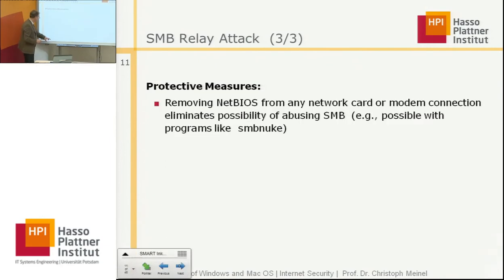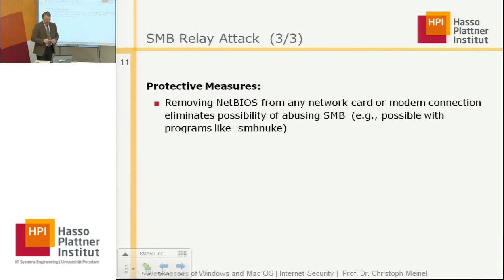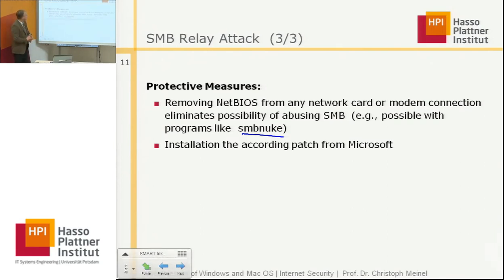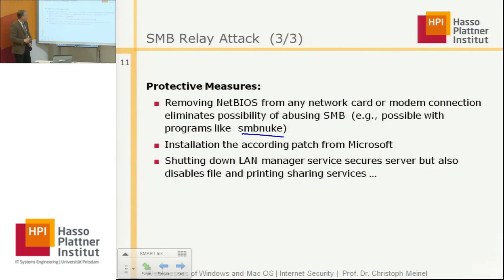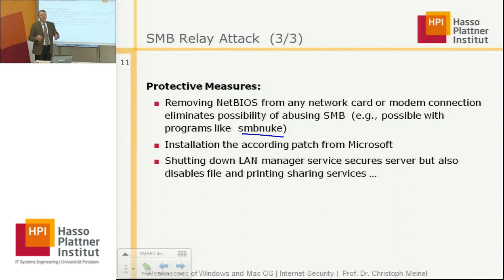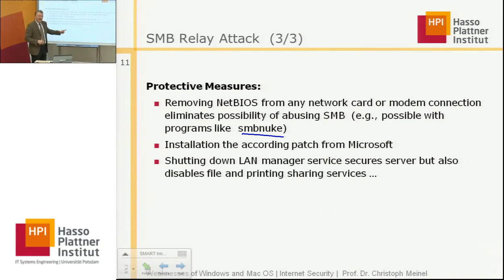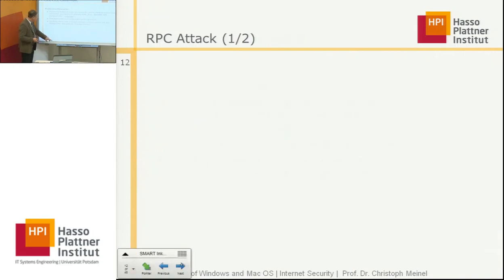What are the protective measures against SMB relay attacks? First, remove NetBIOS from any network card or modem connection — this eliminates the possibility of abusing SMB. One can do this with programs like SMBNuke. Another protective measure is the installation of a corresponding patch available from Microsoft. The third measure is shutting down the LAN Manager services, which secures the server but also disables file sharing and print sharing.